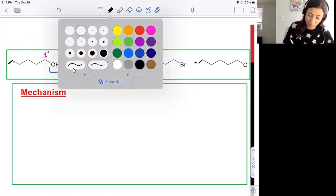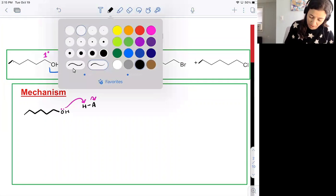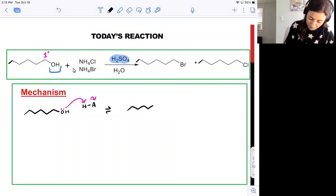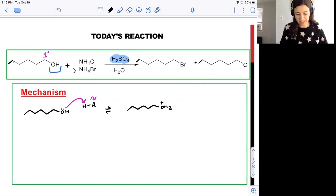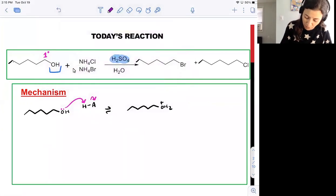Let's take a look at the specific arrow pushing for this process. Here is our alcohol, and I'm going to abbreviate the sulfuric acid with HA. I can begin with a protonation of the alcohol, forming water. Now that I have an excellent leaving group, my nucleophile, which will be either chloride or bromide, is able to attack this primary carbon and directly displace the leaving group, as shown here.